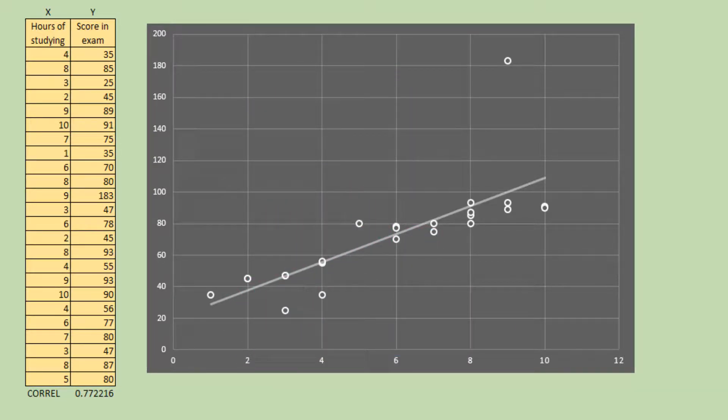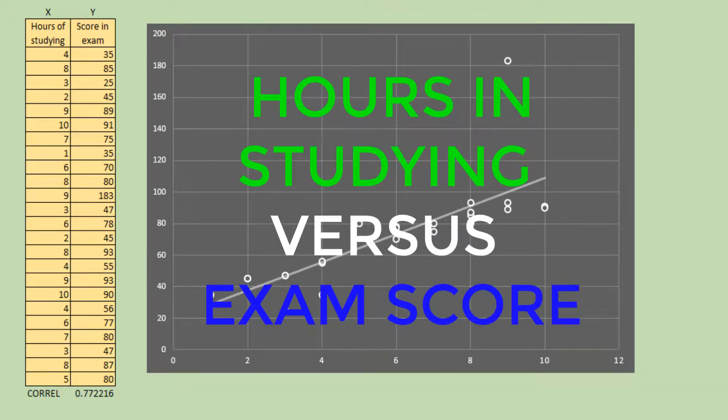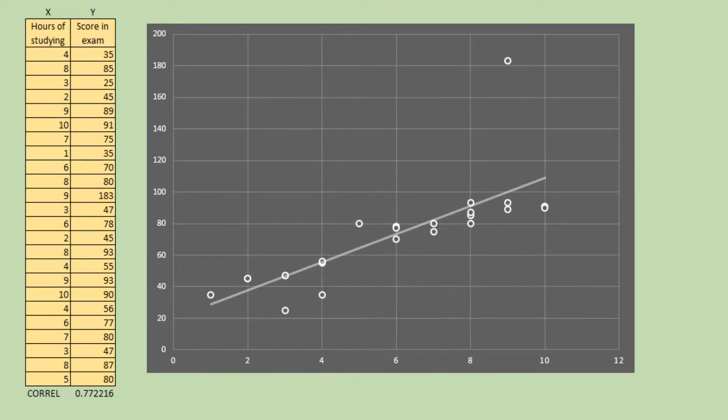For example, you investigate correlation between hours in studying and score in exam. The scatter plot shows an outlier, a point which is far from other points in graph.